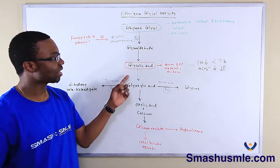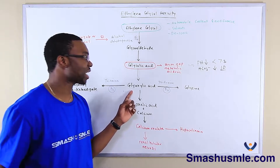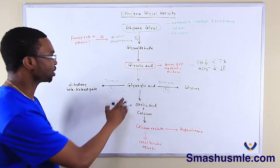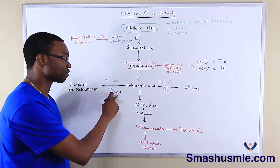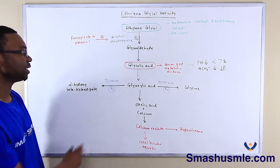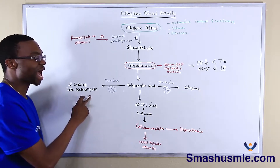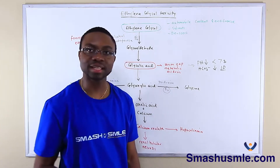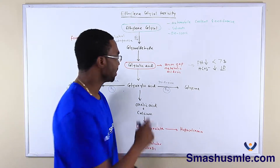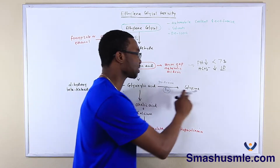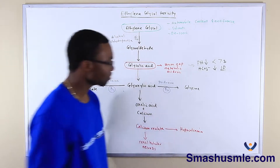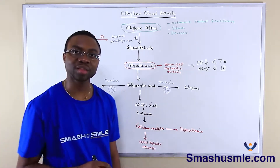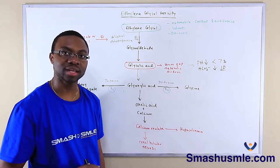This glycolic acid is actually broken down into glycoxalic acid, which is further broken down in the presence of thiamine — which is vitamin B1 — into alpha-hydroxy-beta-ketoadipate. Also, in the presence of pyridoxine, which is vitamin B6, this glycoxalic acid is converted to glycine. So we have two vitamins that are actually responsible within the pathways as we are breaking down ethylene glycol.